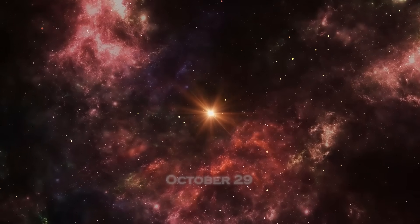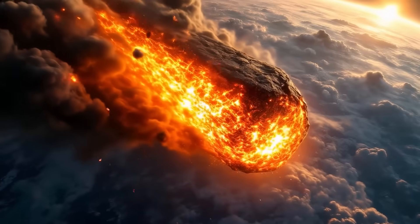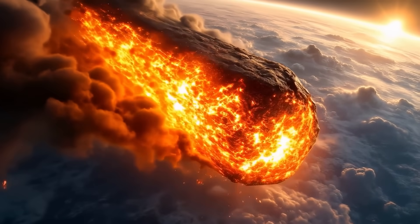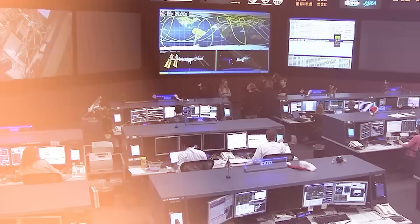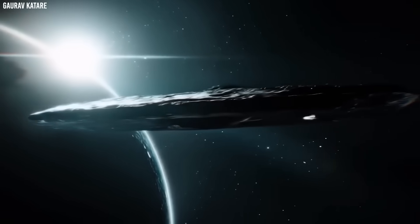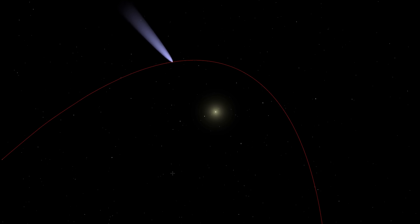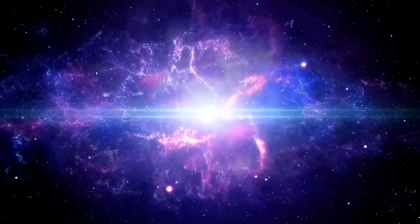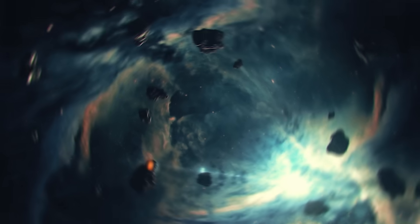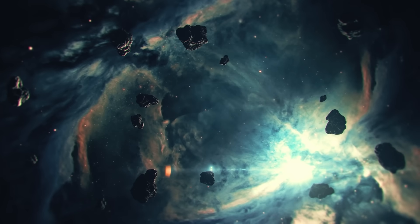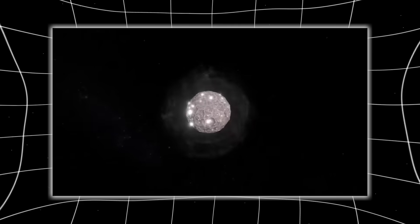On October 29th, as it approached perihelion, 3i Atlas did something no natural comet should ever do. According to NASA's Jet Propulsion Laboratory, the object suddenly and dramatically accelerated, deviating from its predicted orbit by four arcseconds. Four arcseconds sounds tiny, but at a distance of 203 million kilometers, that shift means tens of thousands of kilometers of drift. Not caused by gravity, not predicted by models, but triggered by an unknown force.